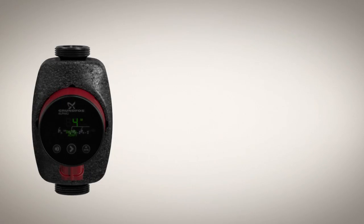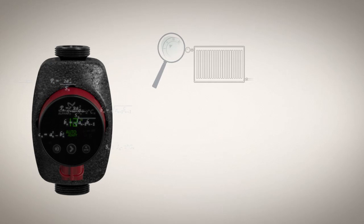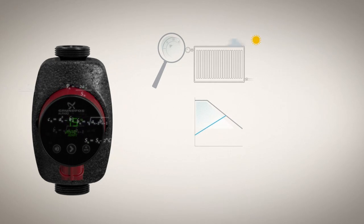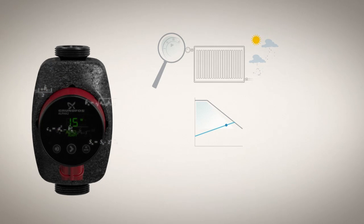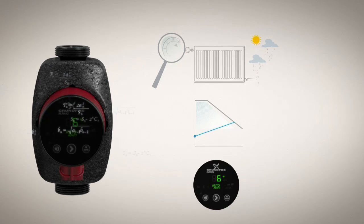Using sophisticated software algorithms auto-adapt continuously analyzes the heating system it's part of and determines whether the pump's differential pressure level matches current needs, selects the best proportional pressure curve for the pump, and controls the pump's output.